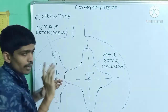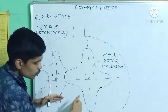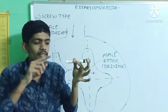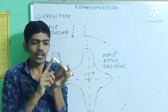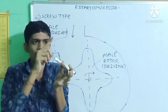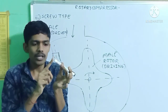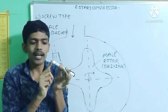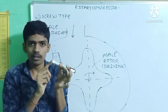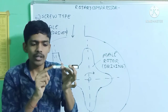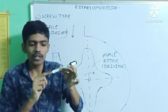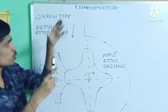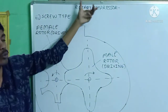Compression takes place as the vapor refrigerant travels between the male lobe and female flutes until it reaches the discharge port. As the rotors continue rotating, the area decreases so the refrigerant gets compressed, and it is then discharged through the discharge port. That is the screw type rotary compressor.